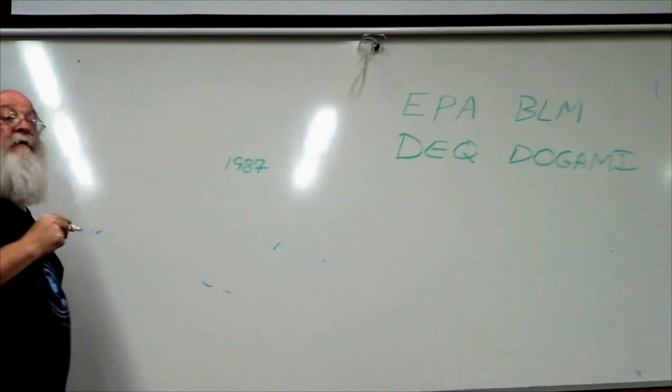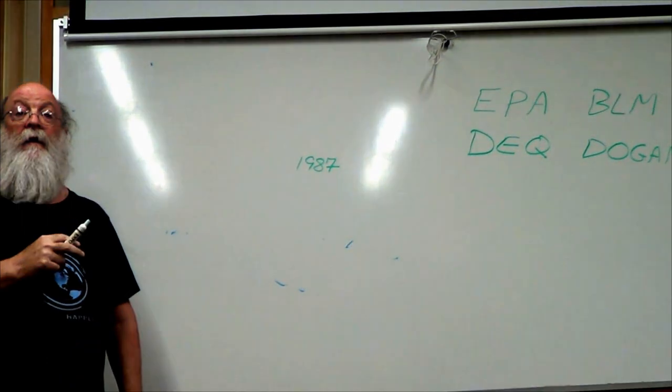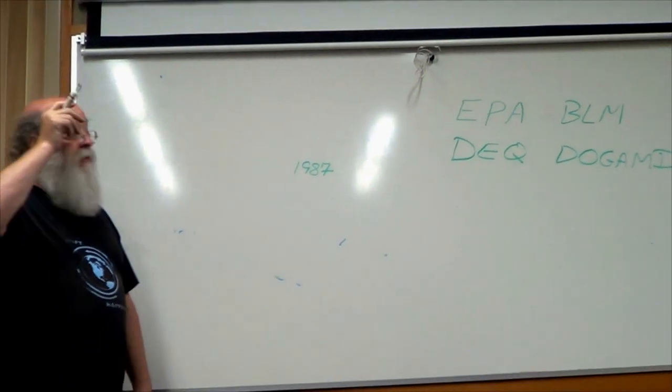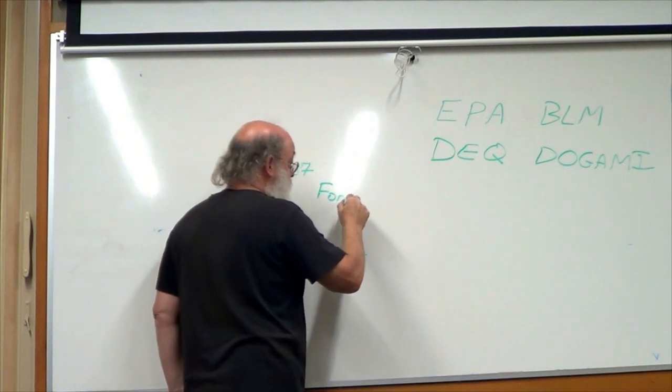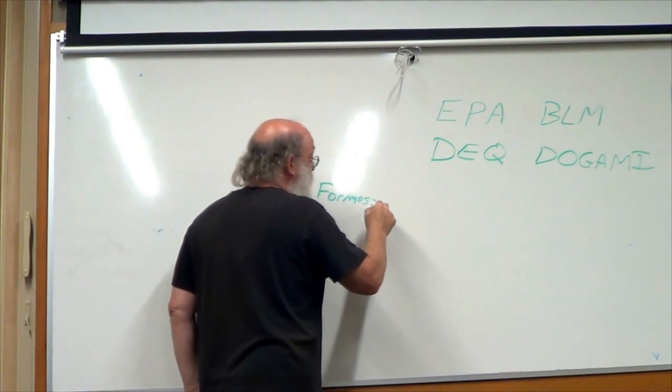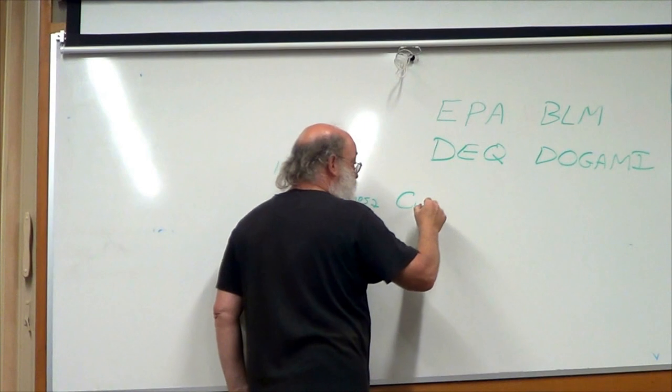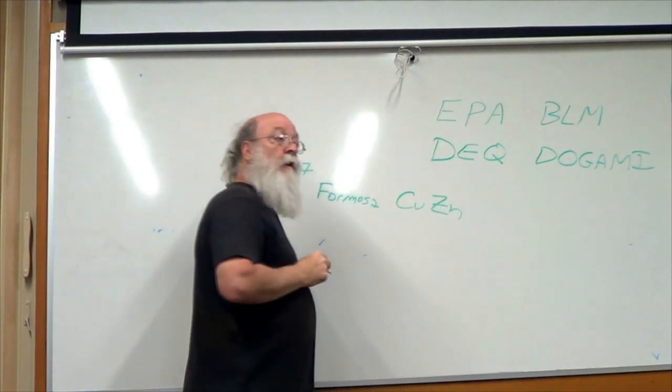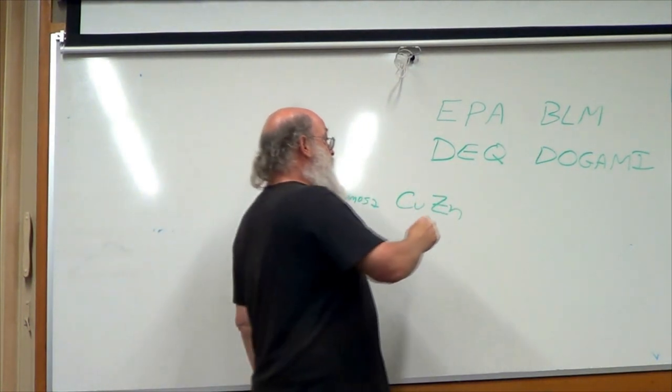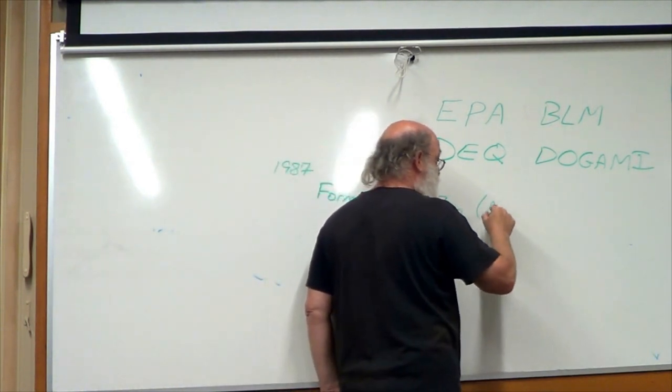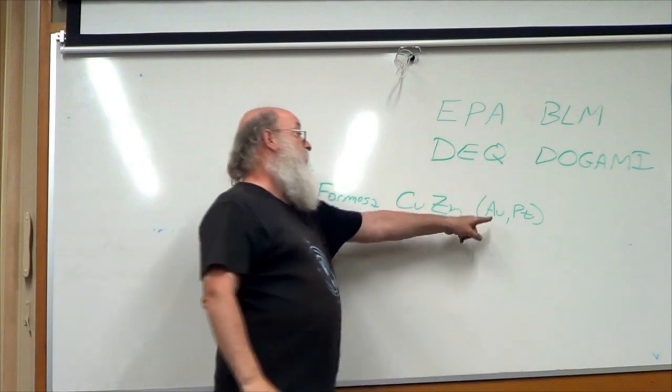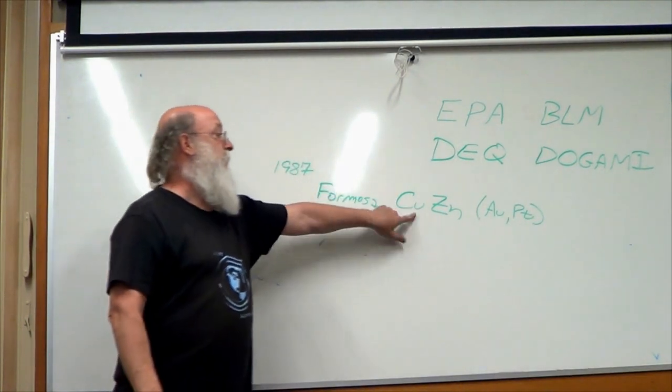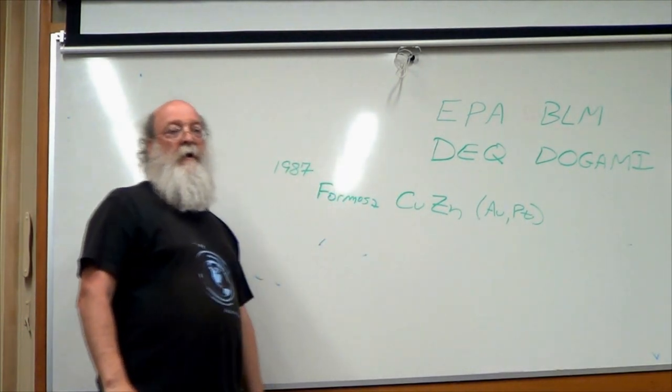In 1987, outside of Riddle, a Japanese company called Formosa started a mine. The Formosa mine had identified that there was copper and zinc there. But in reality, after the fact, we find out that there was gold and platinum there too. And this is what they were really after.